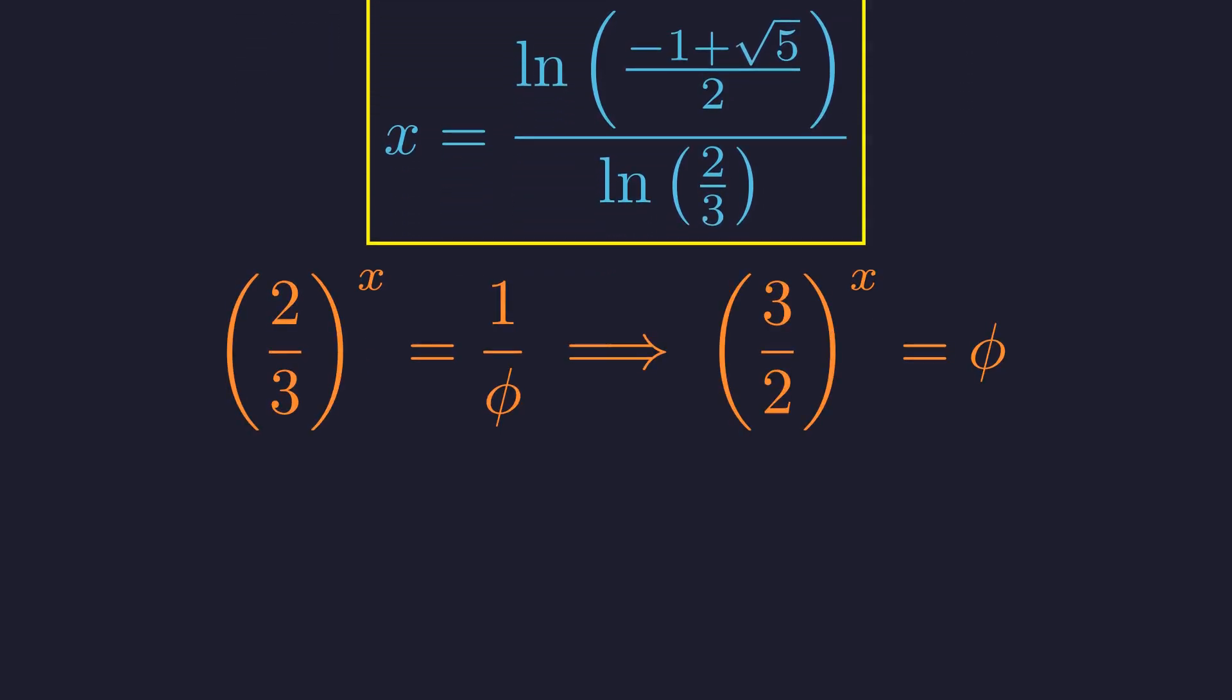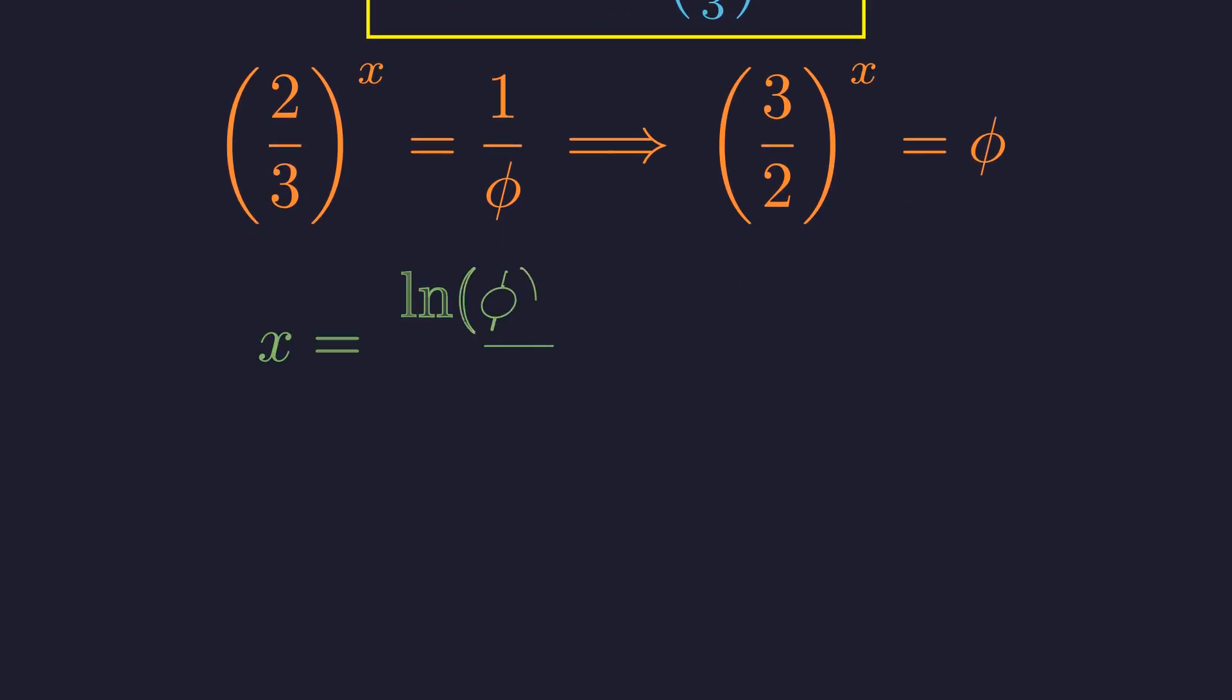We can rewrite our equation in a cleaner form. Since the right side equals 1 over the golden ratio, we can invert both sides to get 3 halves to the power of x equals the golden ratio. This gives us an elegant interpretation. Our equation asks for what power must we raise 3 halves to get the golden ratio? This gives us an even more elegant form for our solution: x equals the natural logarithm of phi divided by the natural logarithm of 3 halves. Calculating this precisely, we get x is approximately 1.187.